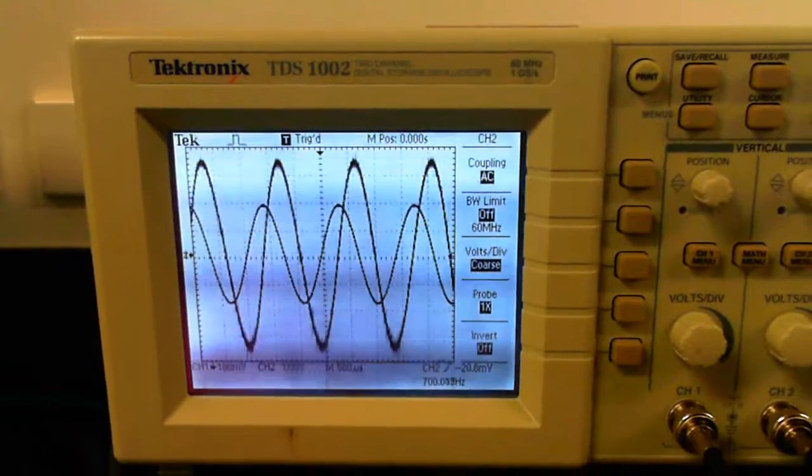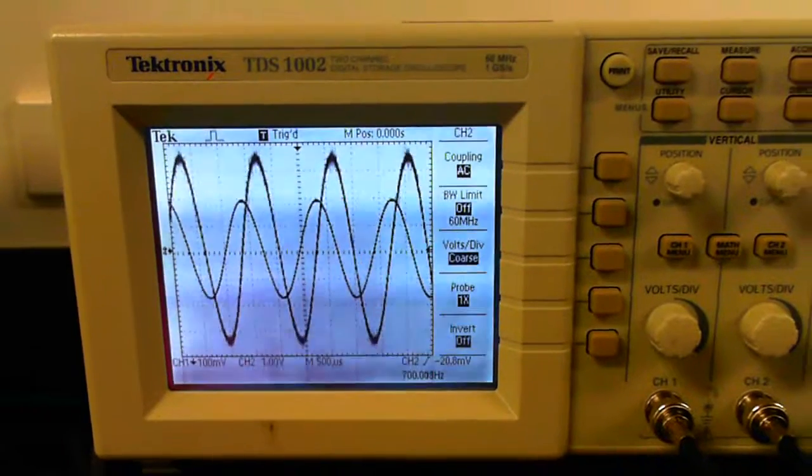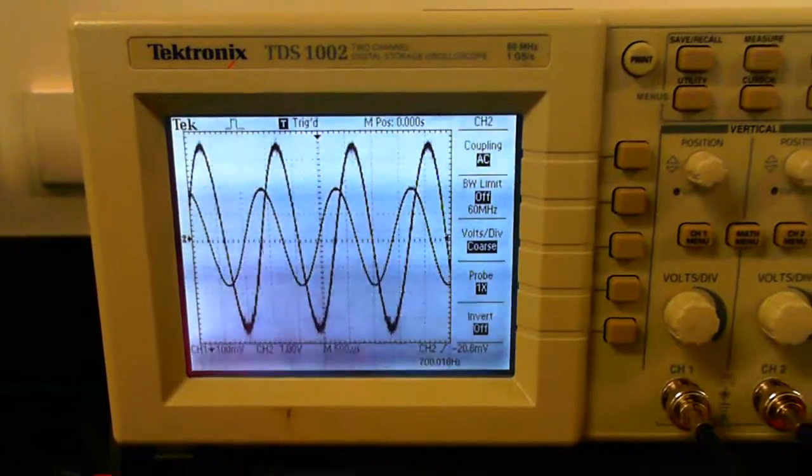And the reason for this is we can't make a perfect inductor. Within every inductor we have, there's a bit of resistance. It's basically a coil of wire.